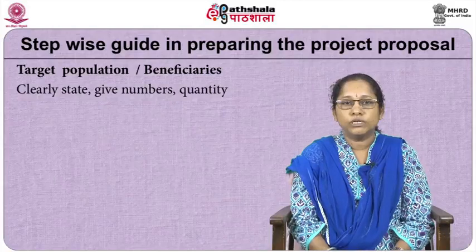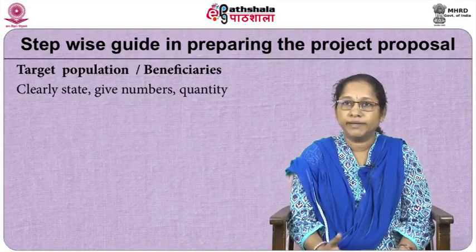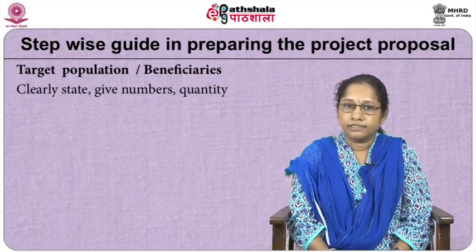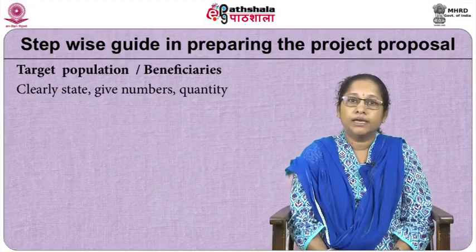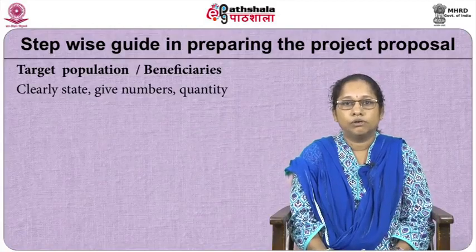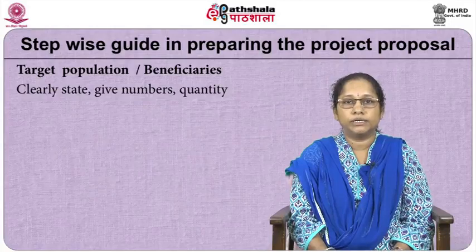The next most important thing is the target population or the beneficiaries. Clearly state who the beneficiaries are, give the numbers or quantity to be addressed with your intervention. The target population could be direct or indirect. Direct are those with whom the intervention directly impacts, and indirect are those who are also impacted because of the effect on the direct population. You can mention both your direct and indirect target groups.